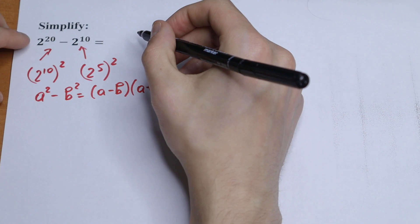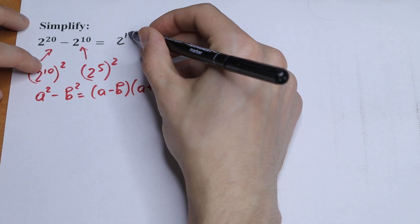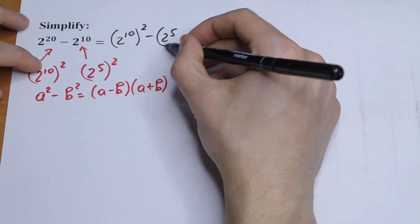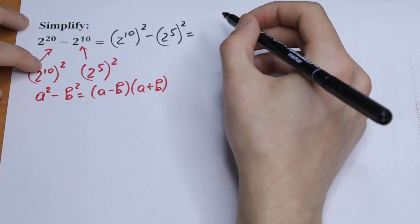So what we will have? We will have 2 to the 10th power squared minus 2 to the 5th power squared.